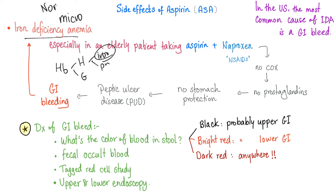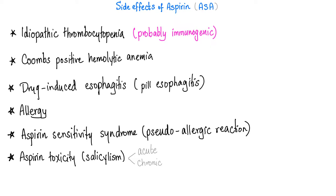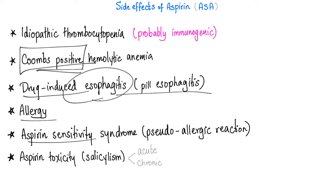Sometimes it starts as normocytic anemia, but then shifts into microcytic anemia — watch my videos on anemia in my hematology playlist. The most common subtype of anemia worldwide is iron deficiency anemia. The most common cause in the developing world is nutritional deficiency; in the modern world, it's GI bleed. Other side effects of aspirin include idiopathic thrombocytopenia, Coombs-positive hemolytic anemia, drug-induced esophagitis, allergy, hypersensitivity, and aspirin toxicity — the topic of today's video.